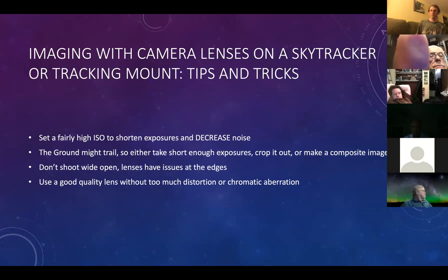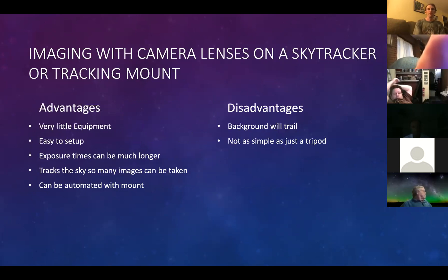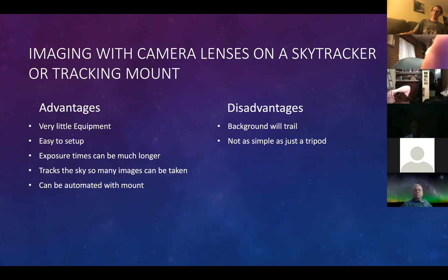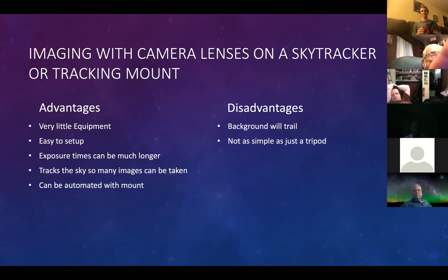You don't really want to shoot wide open — stop down a couple of stops. You need to look up what your lenses can actually handle on DxOMark or another site. You want to use a decent lens. Advantages to using a sky tracker: it's still pretty little equipment — the sky tracker really isn't that big and fits in your luggage. It is fairly easy to set up. The hardest thing is you have to align it to Polaris using the little polar scope, which is not that difficult but does take a couple minutes. Of course, the ground will trail if you're tracking the sky, but there are ways to get around it.